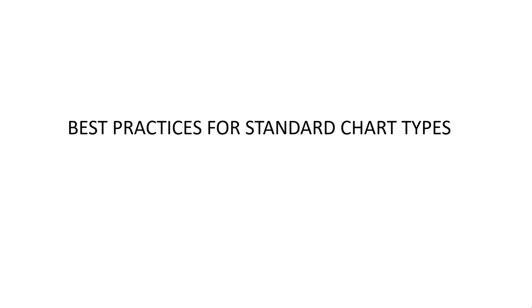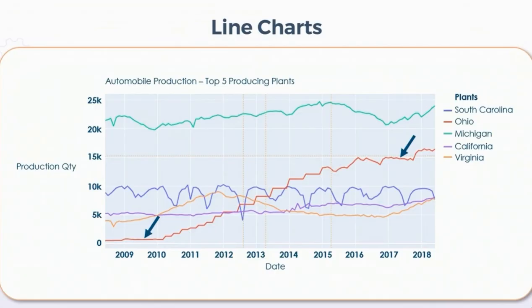Hello friends, let's continue our discussion of best practices for constructing charts. We are turning our attention to line charts. This line chart represents information about automobile production for the top 5 producing plants, and at the x-axis there is a continuous variable which represents time in the form of days, and at the y-axis there is a production quantity that represents a numeric value.